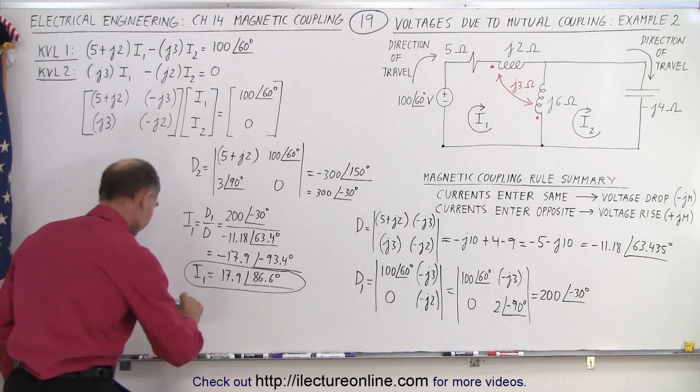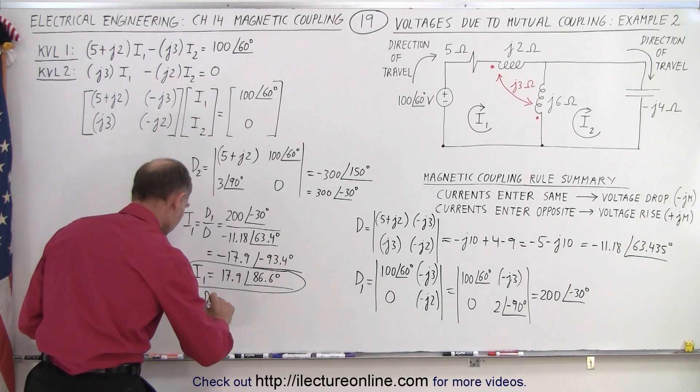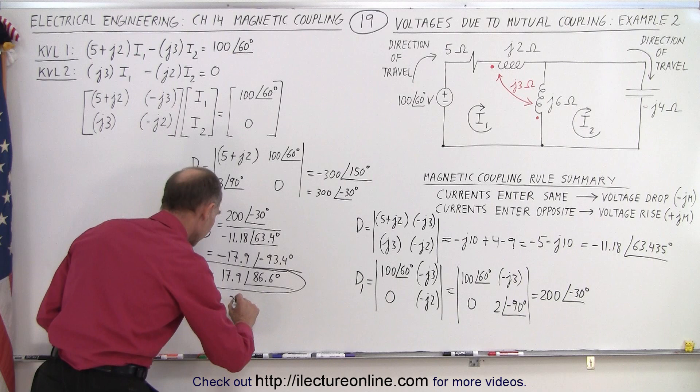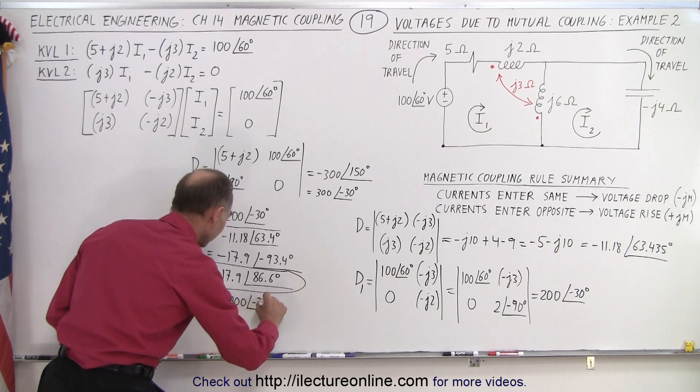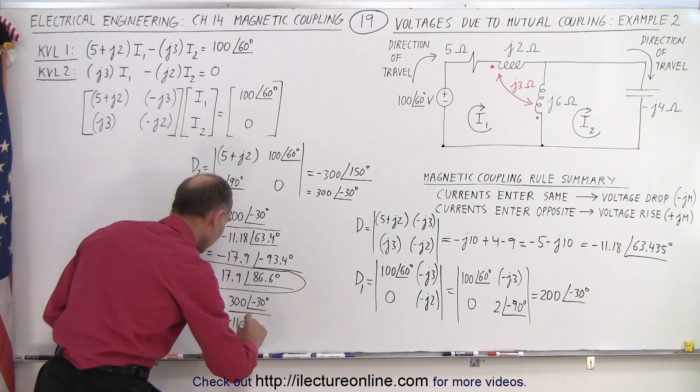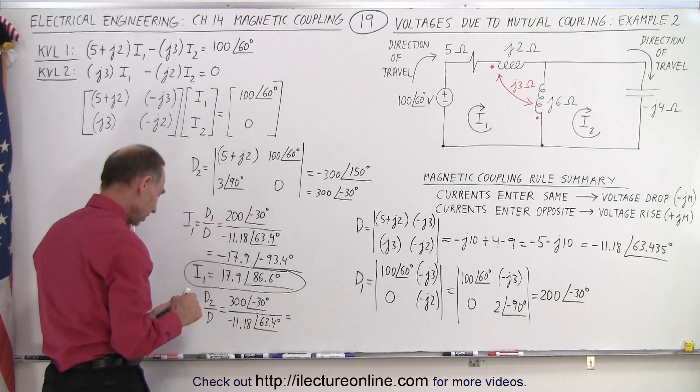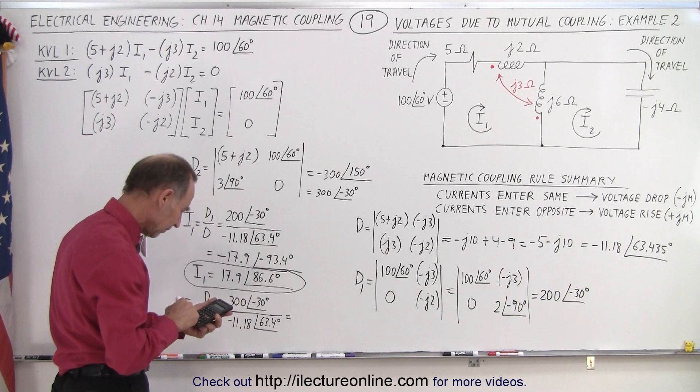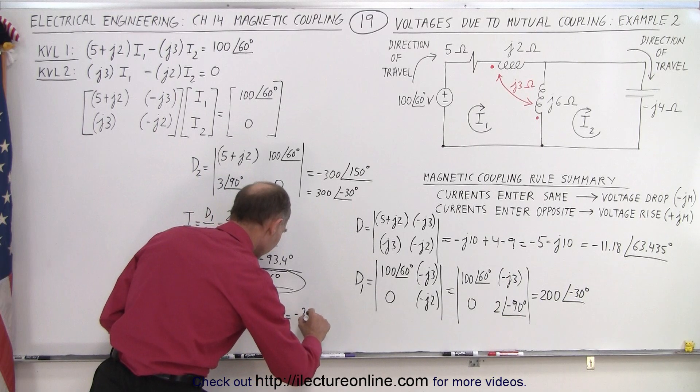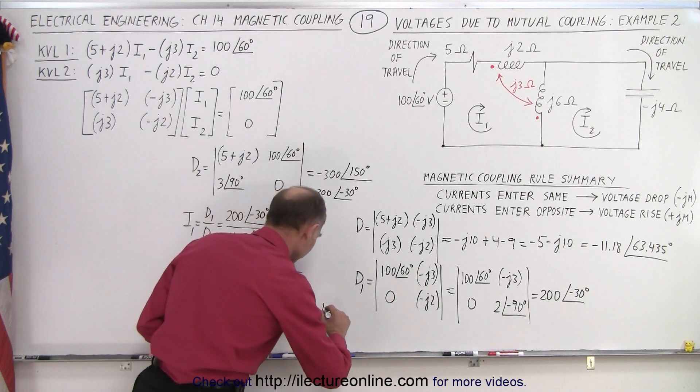Now we go ahead and find I2. And I2 is going to be equal to D2 over D. And D2, 300 with a phase angle of minus 30 degrees, divided by same denominator, minus 11.18 with a phase angle of 63.4 degrees. 300 divided by 11.18, that's a minus 26.8 with a phase angle of minus 30 minus 63.4, that's minus 93.4.